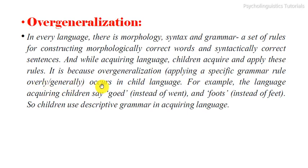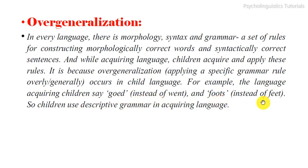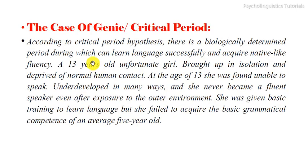Overgeneralization occurs in child language. For example, language-acquiring children may say 'goed' instead of 'went' and 'foots' instead of 'feet.' Children use descriptive grammar in acquiring language, and this is another limitation of the behaviorist theory.